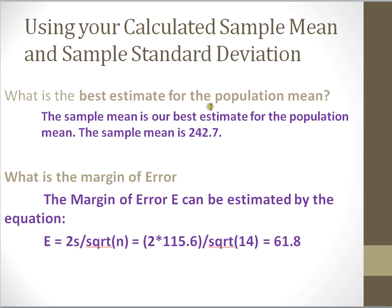So in our next example, using our calculated sample mean and sample standard deviation, what is the best estimate for our population mean? Our best estimate for our population mean is always going to be our sample mean. If we have many sample means, that's even better — we'll get a closer estimate and can take the average of them. But if we have only one sample mean, which we do in this case, it is the best estimate that we have for our population. So because our sample mean is 242.7, the best estimate for our population mean is 242.7.